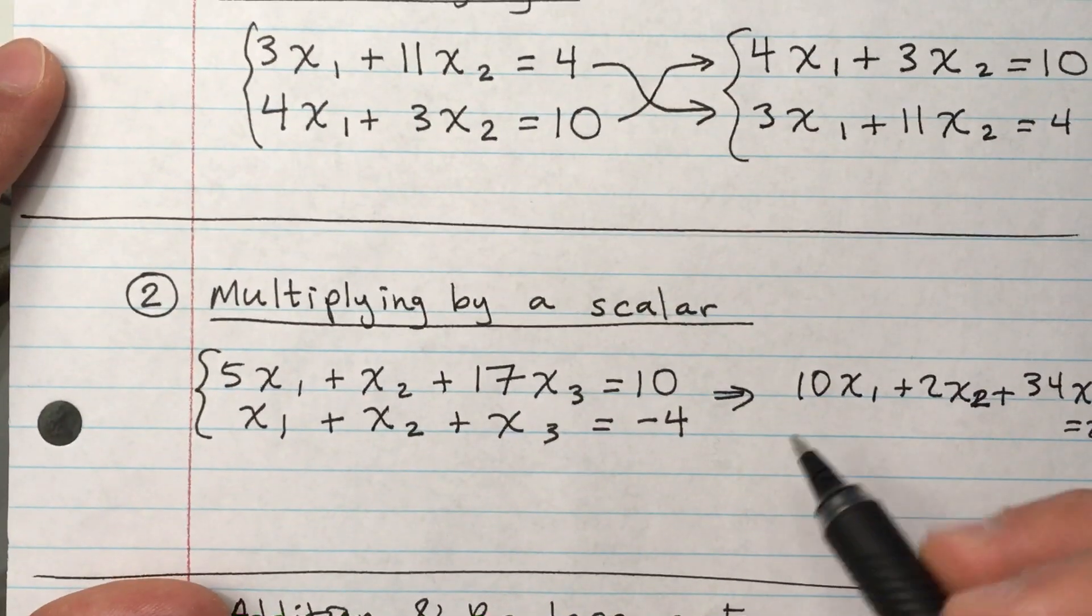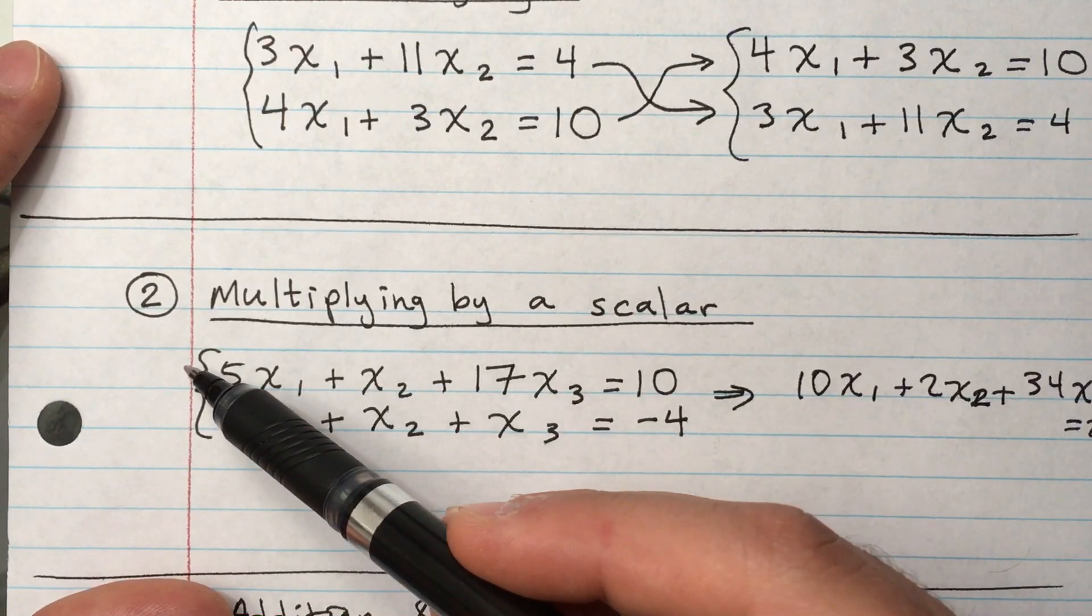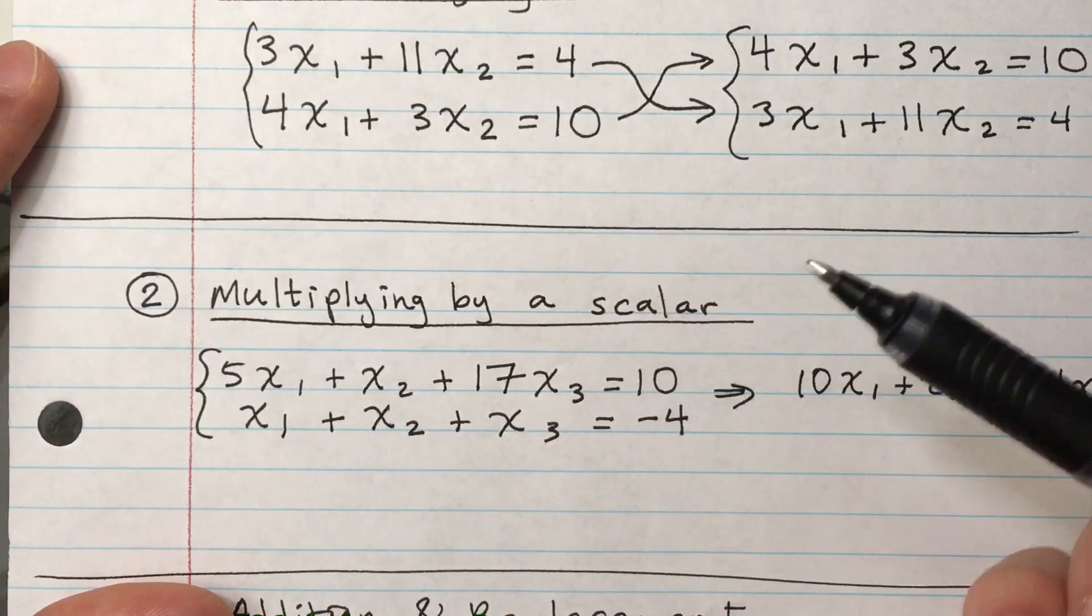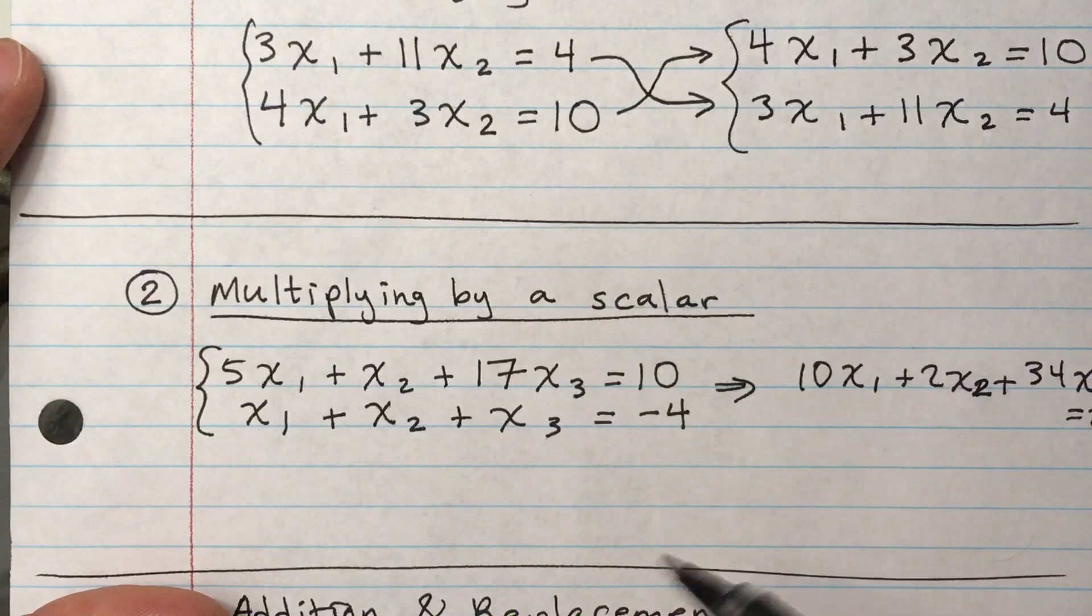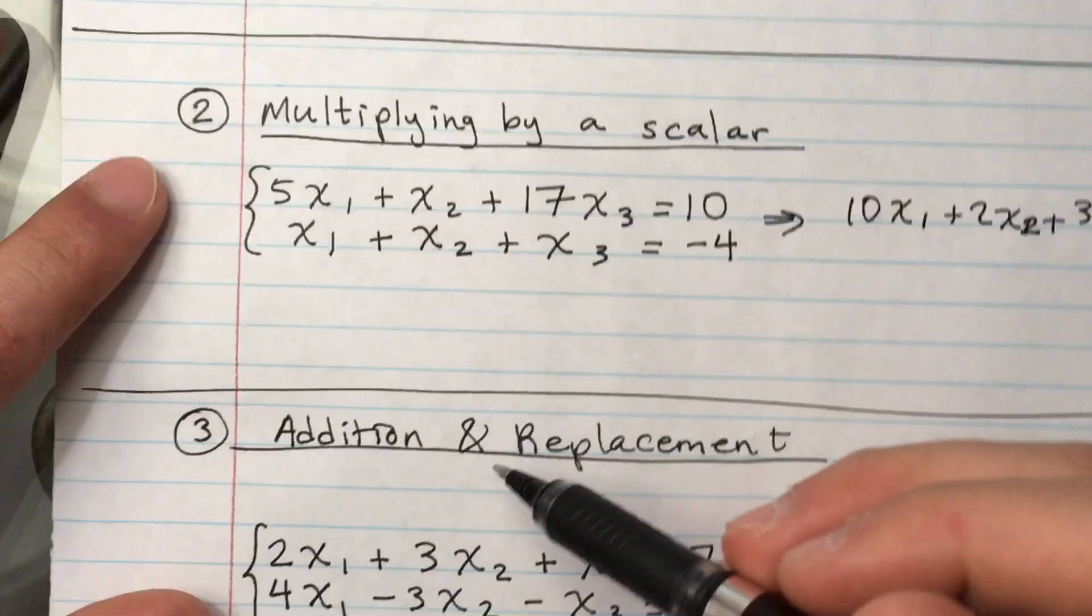And then I just write down the second equation the way it is. I would still have the equivalent system as it was in the first place. I can multiply this one by some number and this one by another number, like this one by two and this one by five, that would still be equivalent.